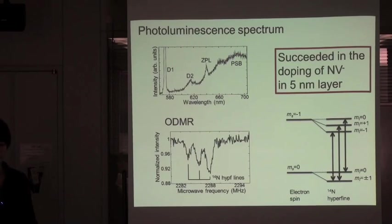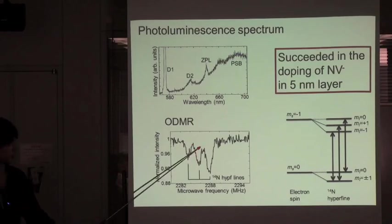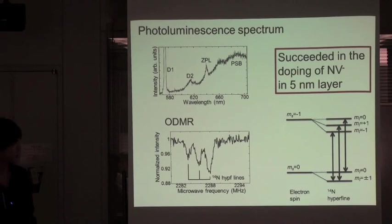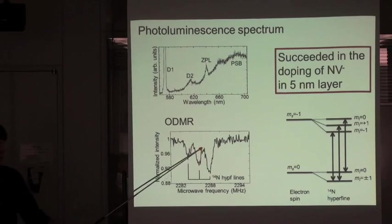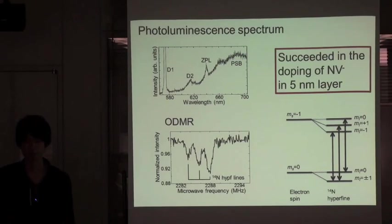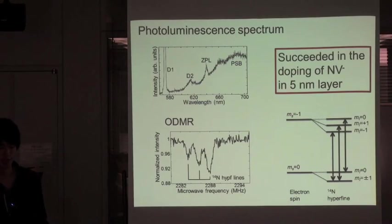In addition, we did ODMR measurement of this bright spot. The three hyperfine splitting due to coupling to nitrogen-14 nuclear spin was clearly observed. Therefore, these bright spots are NV minus center. We succeeded in the doping of NV minus center in 5 nanometer thin layer.